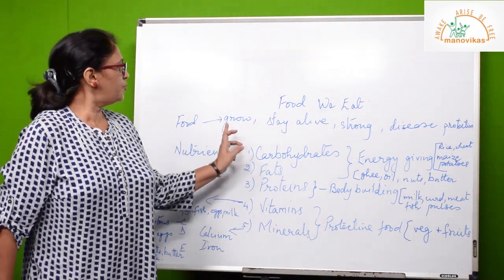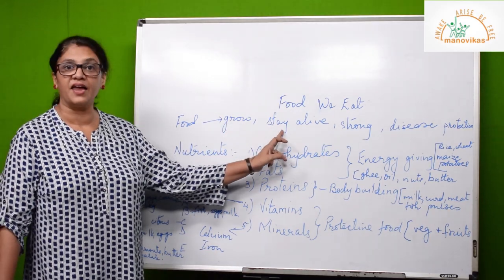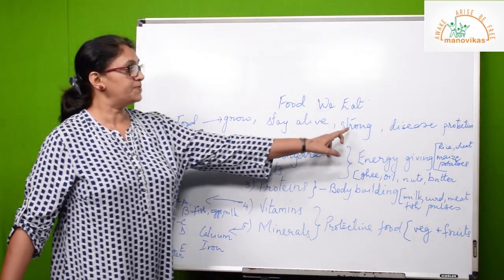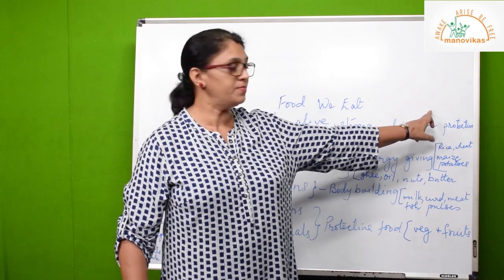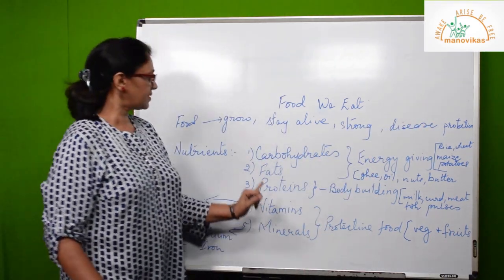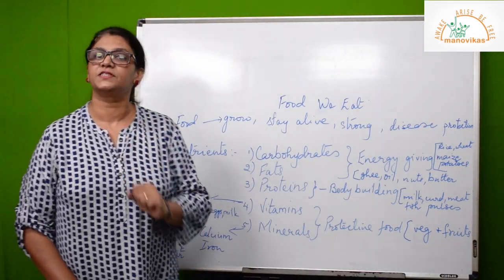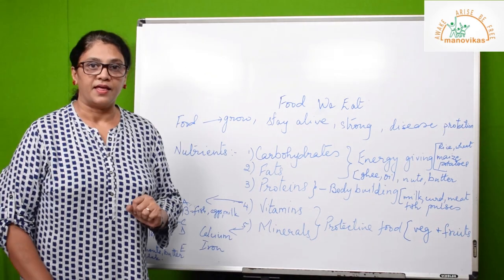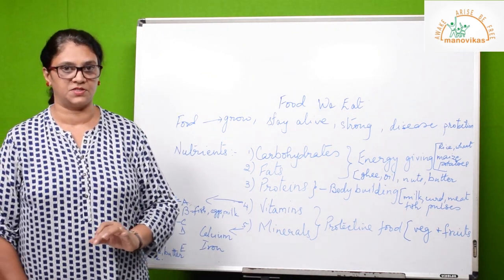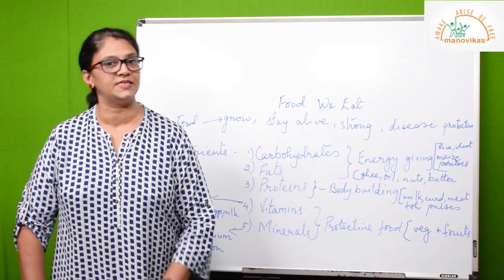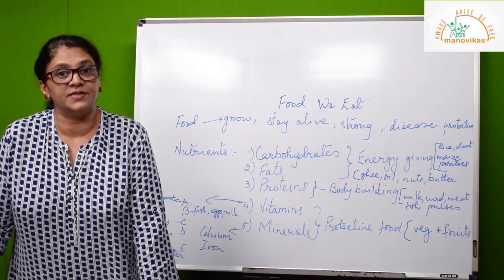Food helps us to grow, it keeps us alive, it keeps us strong, and protects us from diseases. Now there are some substances in food that keep us healthy, and those substances or materials in food that keep us healthy are called nutrients.